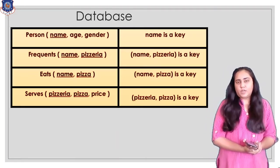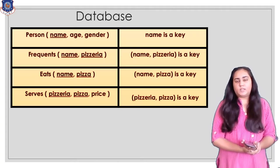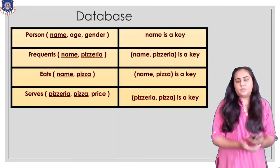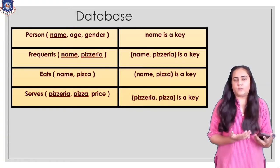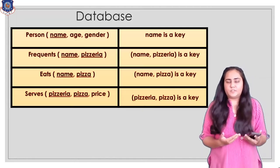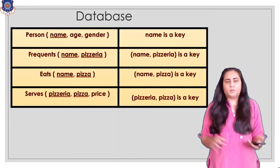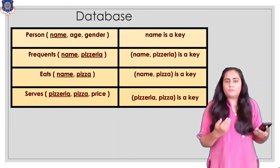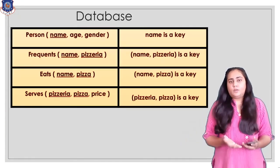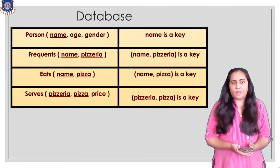The next table is frequent, which contains the name of a person and the pizzeria where the person is frequently going. A pizzeria is a restaurant that sells pizzas. If a person is frequently going to Domino's, then the entry of that person will be present in the frequent table with their name and the name of the pizzeria. Here the primary key is formed by the combination of name and pizzeria.